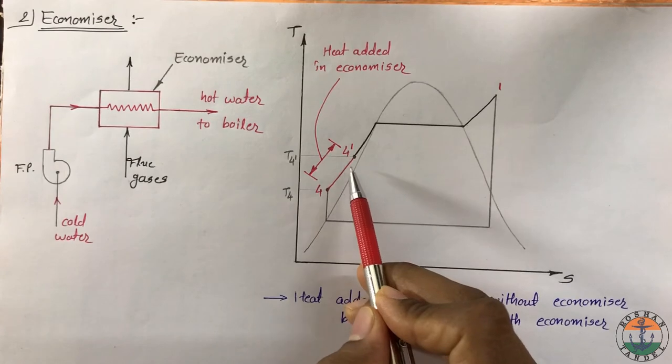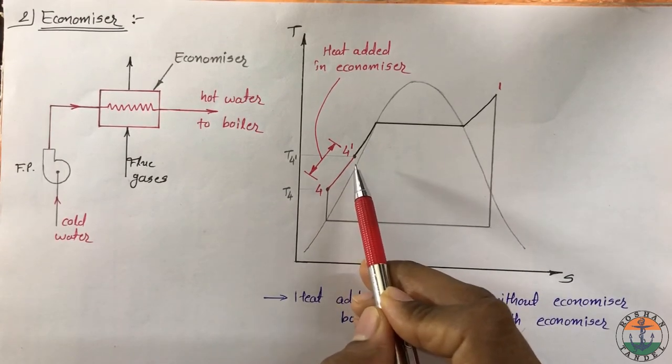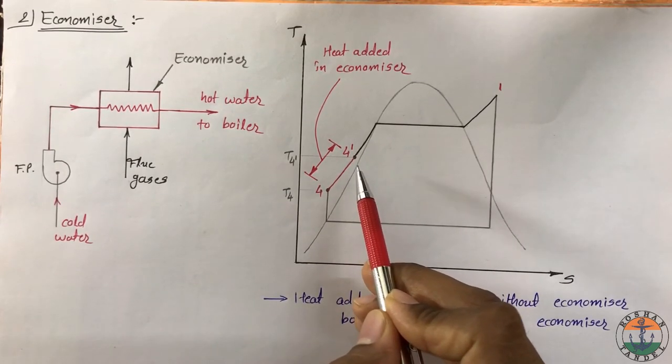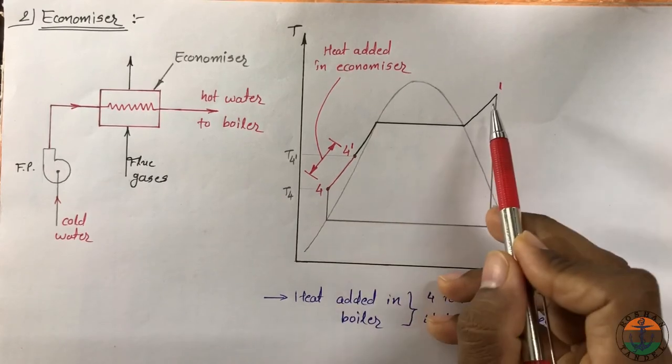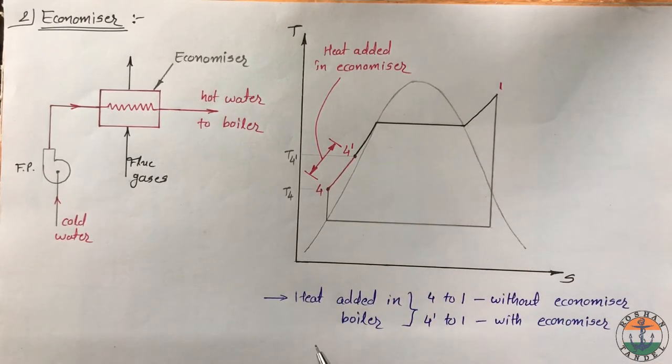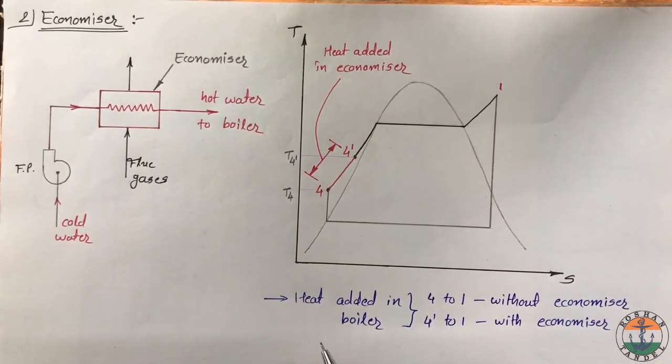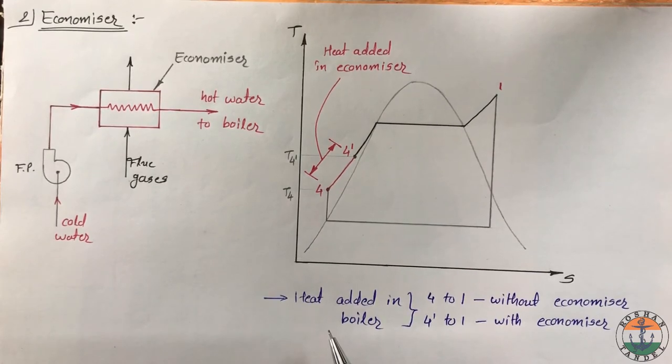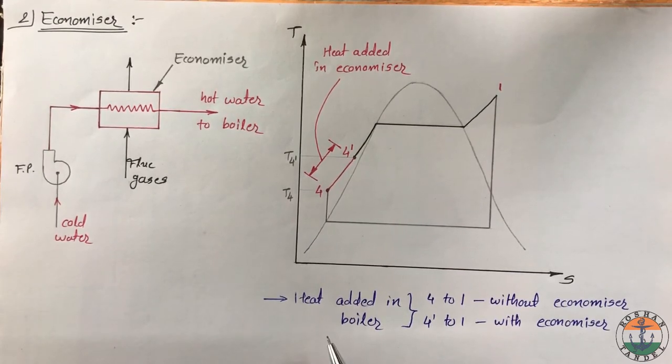If feed water is supplied at elevated temperature to the boiler, then less amount of heat is needed for steam conversion. So fuel consumption in the boiler can be decreased by using economizer.